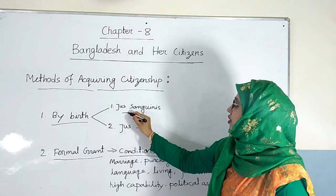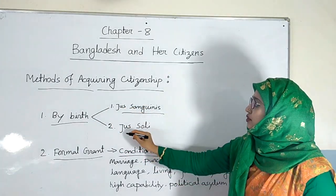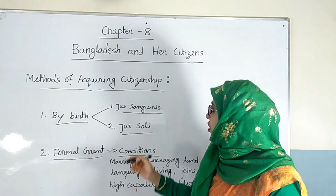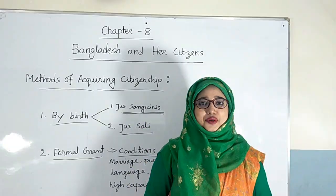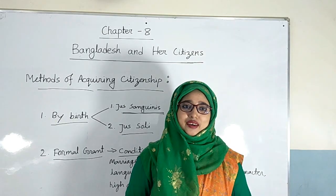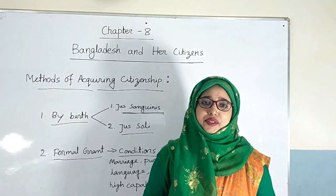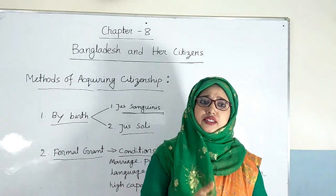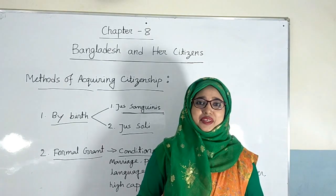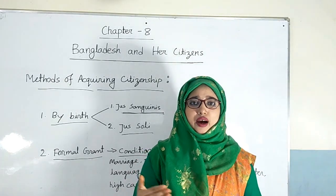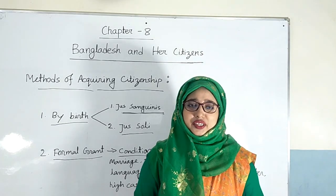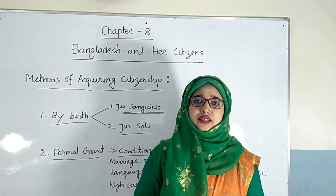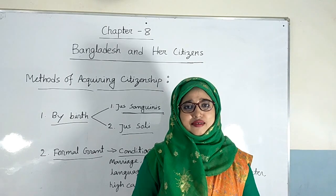According to the principle of birth, there are two ways. Number one, Jus Sanguinis, and number two, Jus Soli. Now I will discuss Jus Sanguinis. According to this principle, the child will be the citizen of that country where its parents are citizens. If the child of any parent is born in a foreign country, he or she would still be the citizen of his or her parent's country. This is called Jus Sanguinis.